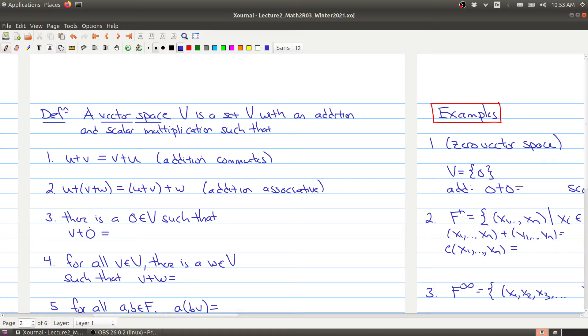The next property is saying that there's a special element 0 inside of V such that V+0 is the same thing as 0+V (that's coming from the first fact), but it just gives you back V. This is true for all elements V in my set V. This is called the additive identity.